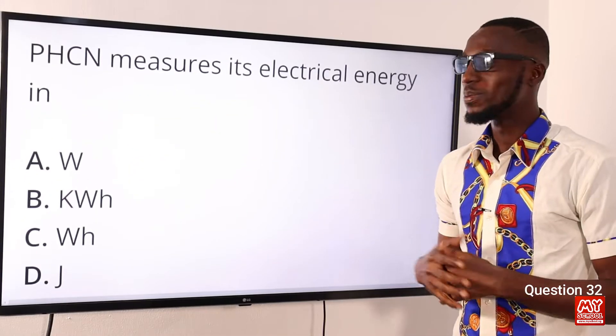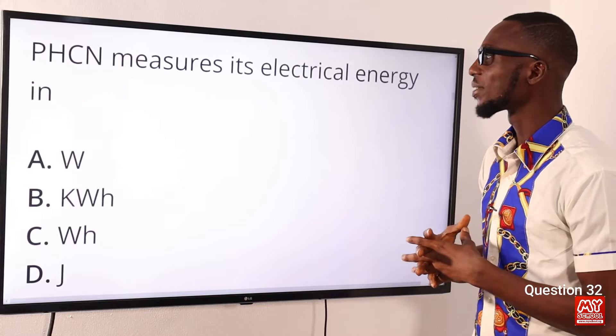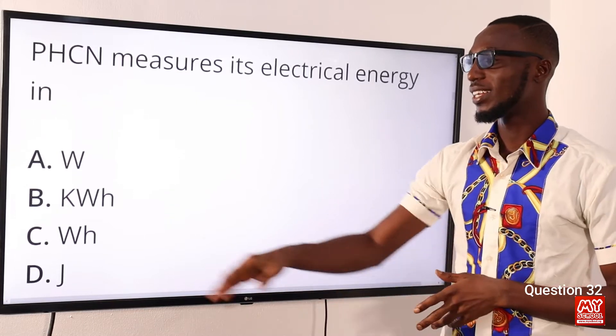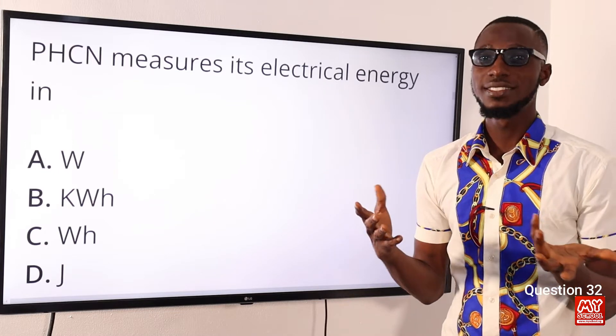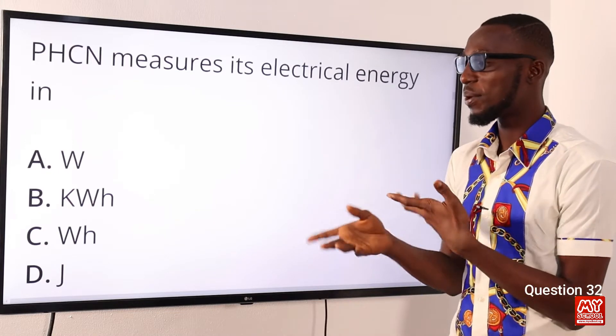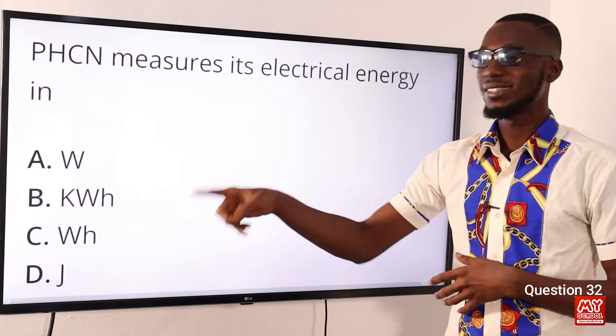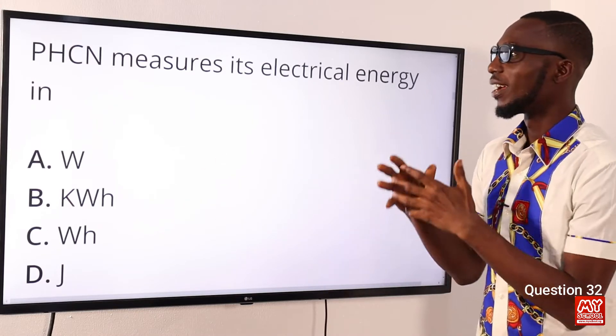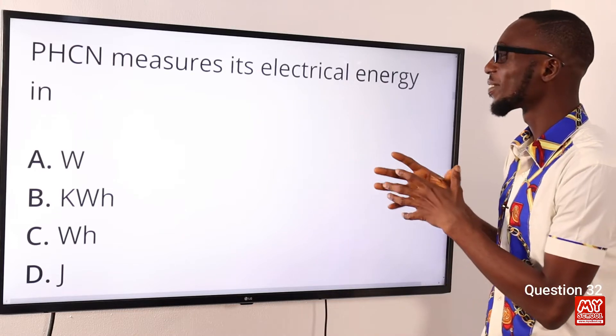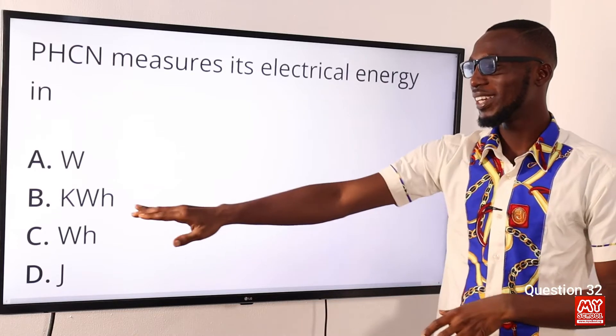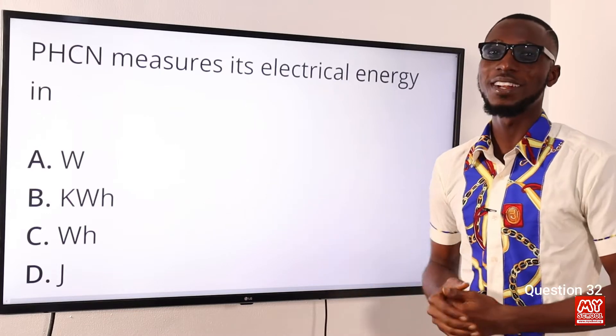Question 32. PHCN measures its electrical energy in what? In kilowatt hour. You are talking about a particular appliance when it uses a power of 1 kilowatt just in an hour. So, PHCN, formerly known as NEPA, measures its electrical energy in option B, kilowatt hour. So, option B is your correct option.